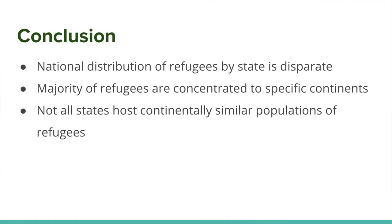There are three main takeaways achieved by this visualization. First, national distribution of refugees by state is disparate. Secondly, the majority of refugees come from specific continents — Asia, the Middle East, and Africa. Third, not all states have similar breakdowns of refugees.